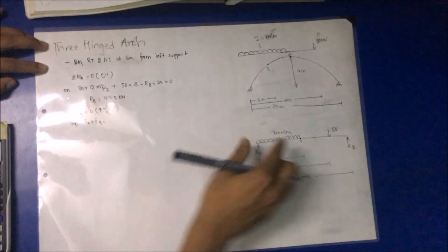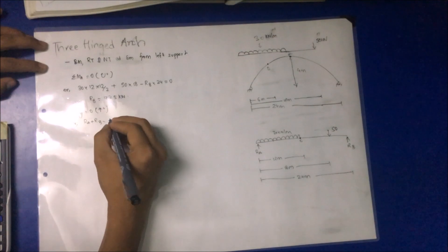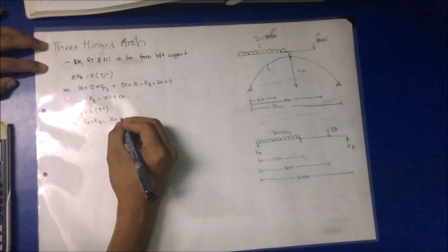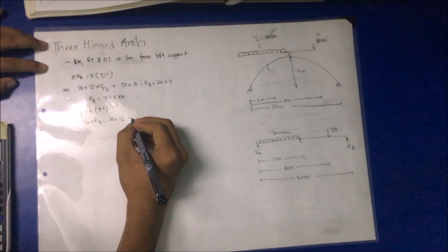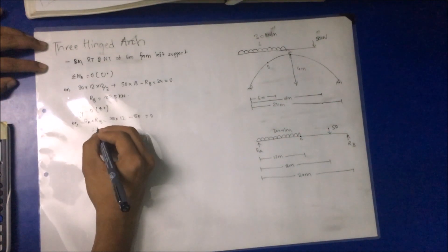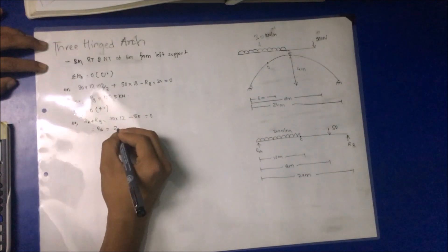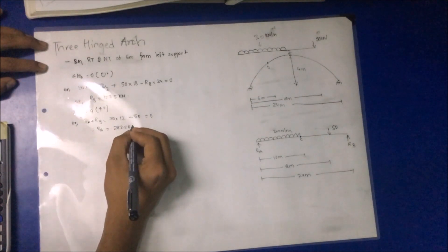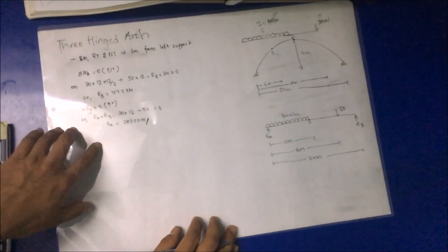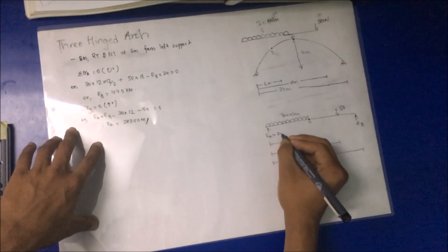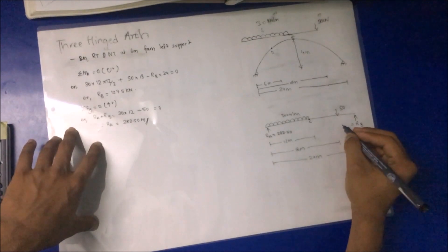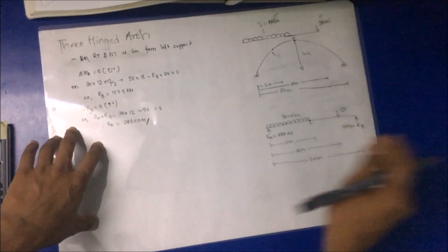Applying the vertical equilibrium condition (ΣFy = 0): RA + RB − 30 × 12 − 50 = 0, giving RA = 282.5 kN. So RA = 282.5 kN and RB = 127.5 kN.